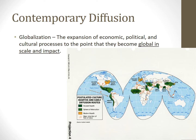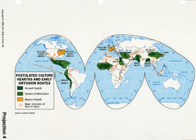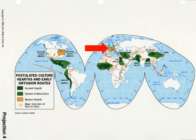So where are the hearths of popular culture? We notice on this map that dark green are the hearths of ancient culture. But we're going to look at the modern hearths of culture, which are in orange. The modern hearths of culture are highly developed, very urban areas: Eastern North America, Western North America, Western Europe, and Japan. And even if popular culture traits don't originate in these specific locations, they are heavily influenced by them.